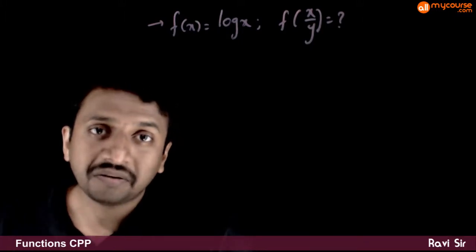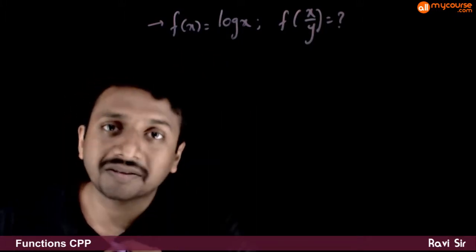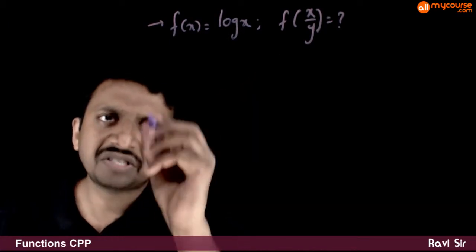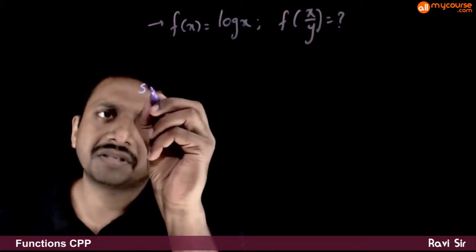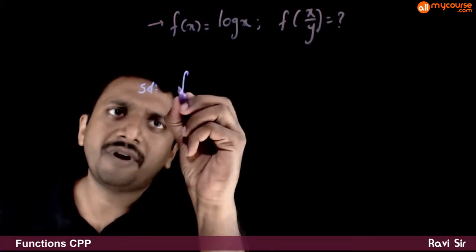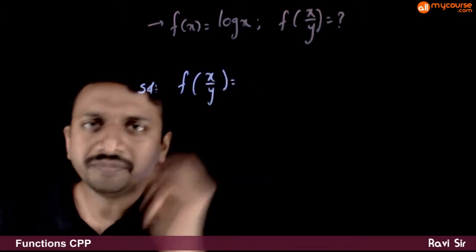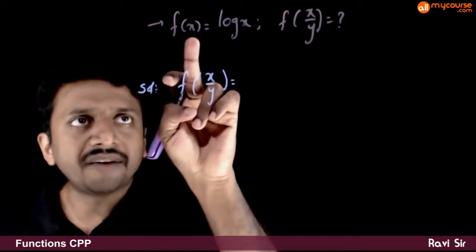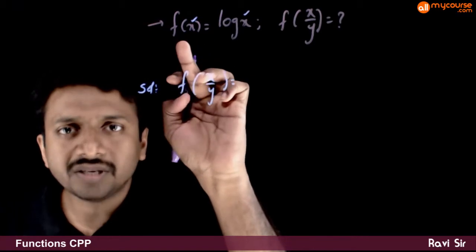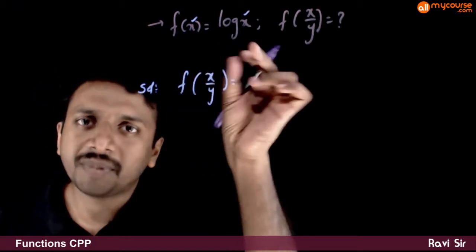In this question, given that f(x) is equal to log x, what is f of x by y? Very straightforward question. So f of x by y is equal to — f(x) is log x — if x goes in, you get log of that number outside.